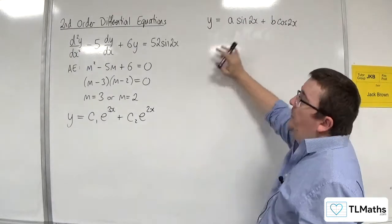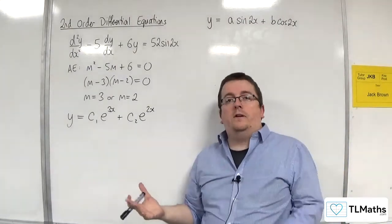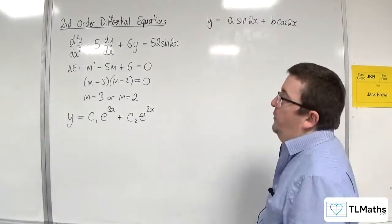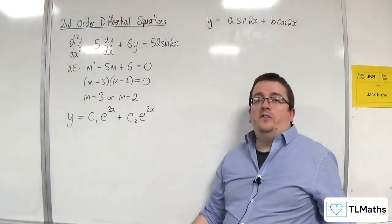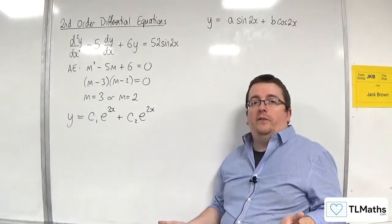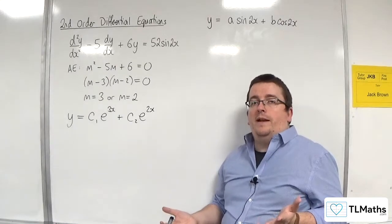The values at the front, the constants, have to be there as well, because we might have multiples thereof, of sine 2x and cosine 2x. But why do we need both sine 2x and cosine 2x? The reason is that you need to cover all eventualities of how this is going to play out.